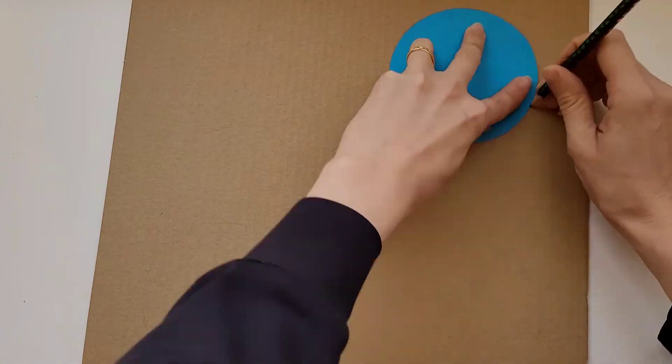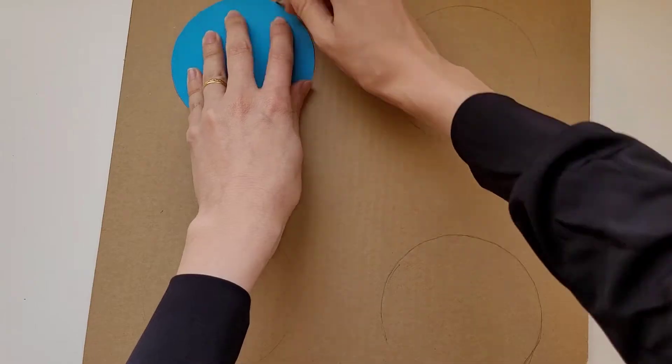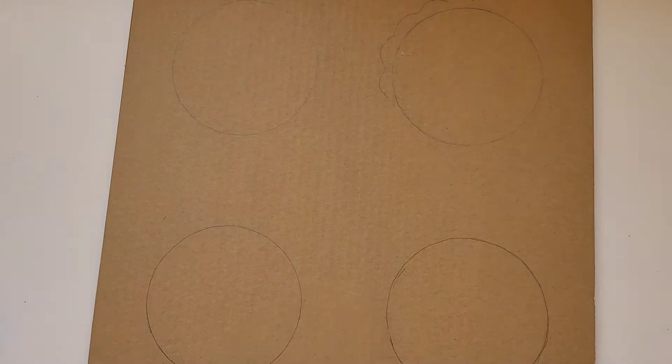We'll start out with two rectangular pieces of cardboard that are the same size. On the first one we're going to draw four circles. I use this paper cutout to help me draw the circles.